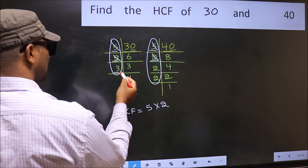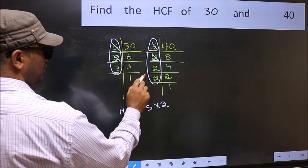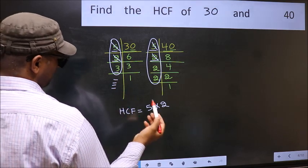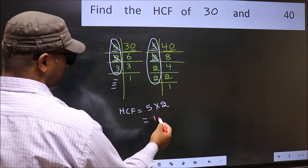Next number 3. Do we have 3 here? No. No more numbers have been left out. So our HCF is 5 into 2, 10 is our HCF.